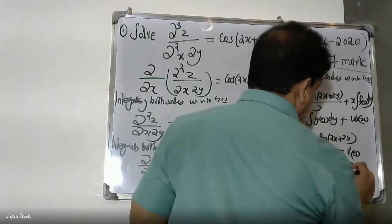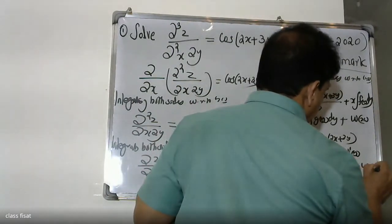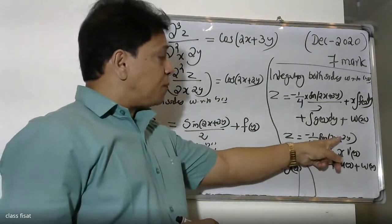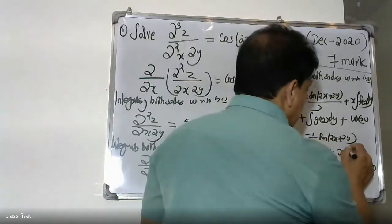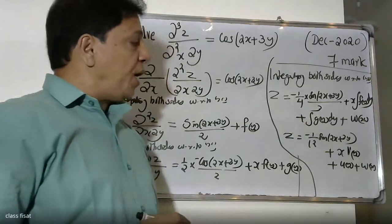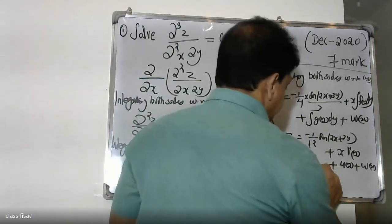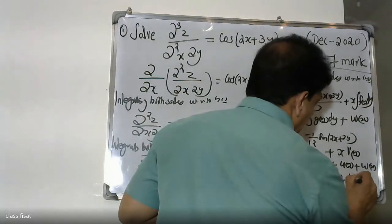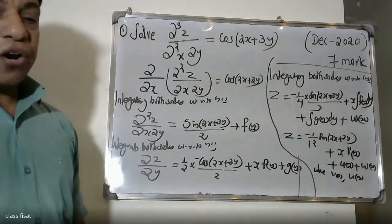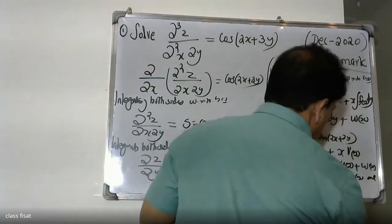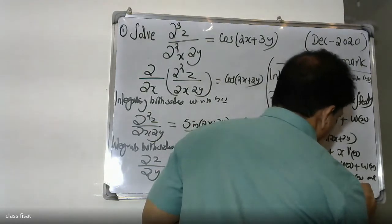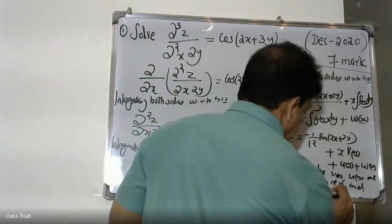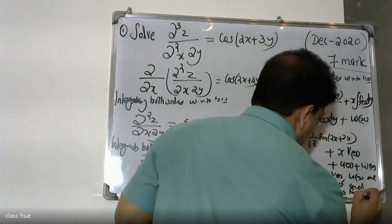Plus g of y, plus m of x. Now, the final answer is z is equal to minus 1 by 12 sin(2x + 3y), plus x into v(y), plus u(y), plus w(x), where v(y) and u(y) are functions of y, and w(x) is a function of x only.